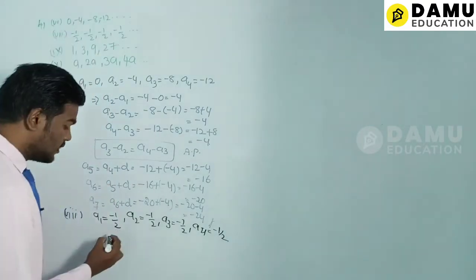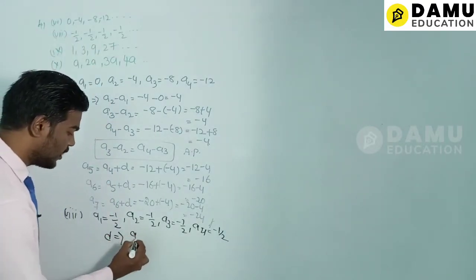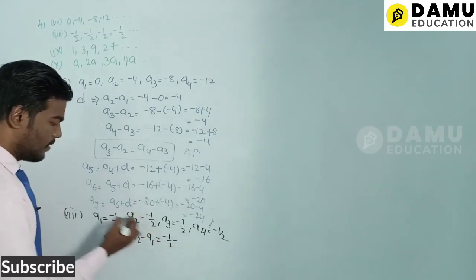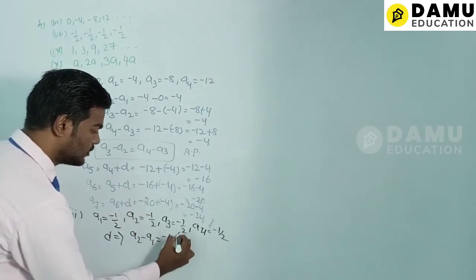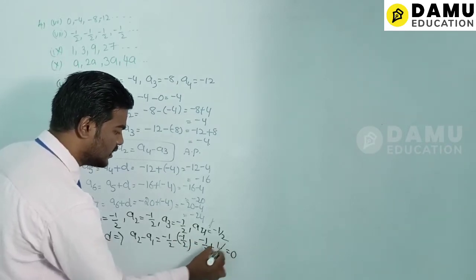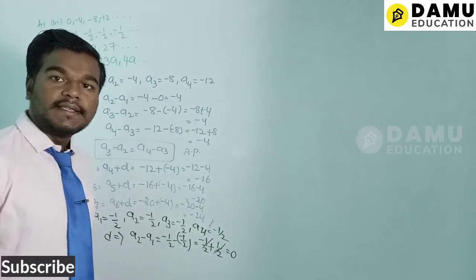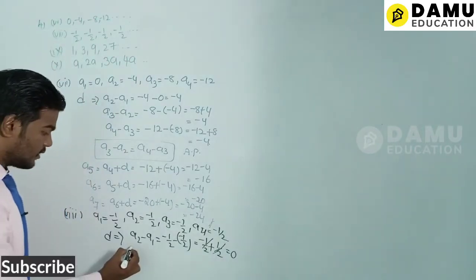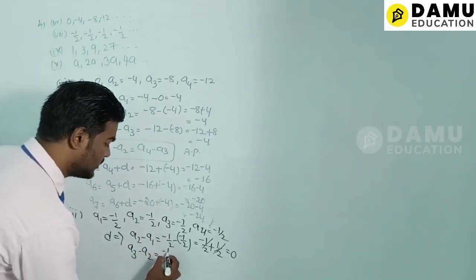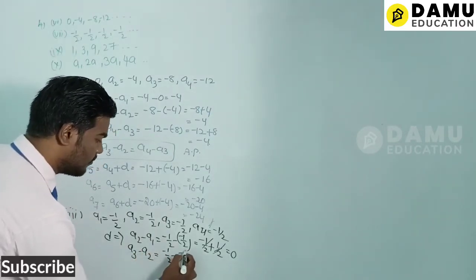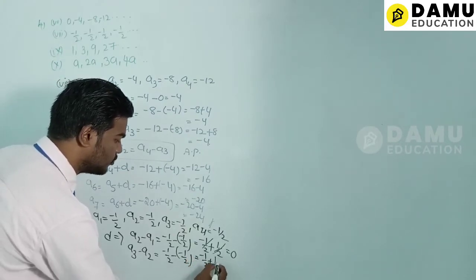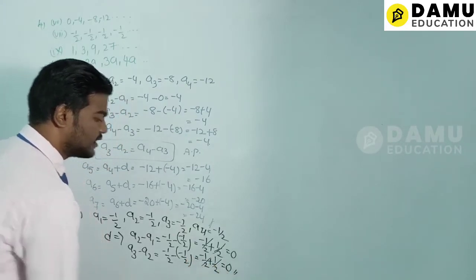The common difference d = a2 − a1 = −1/2 − (−1/2) = −1/2 + 1/2 = 0. Similarly a3 − a2 = −1/2 − (−1/2) = 0.